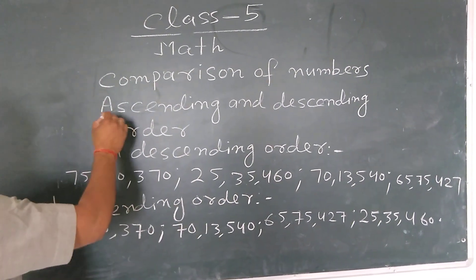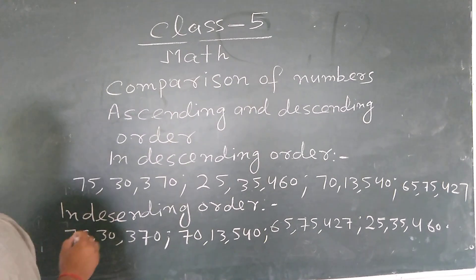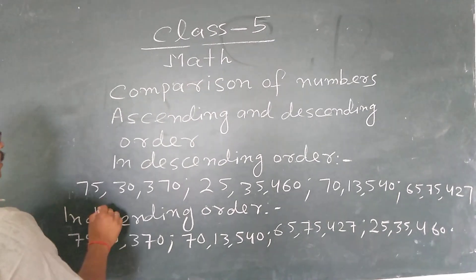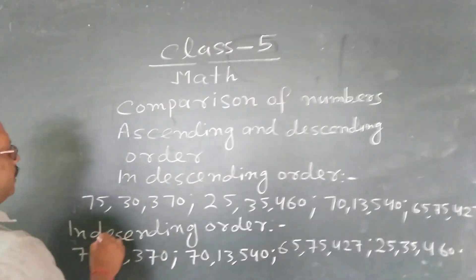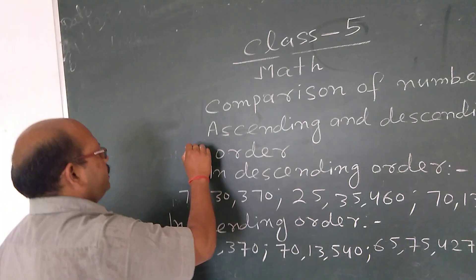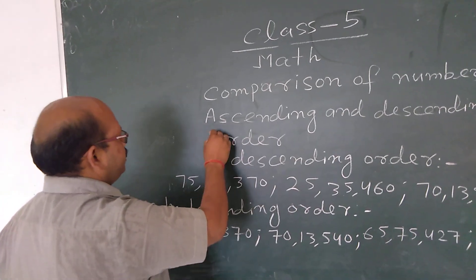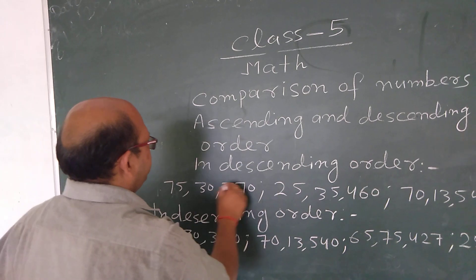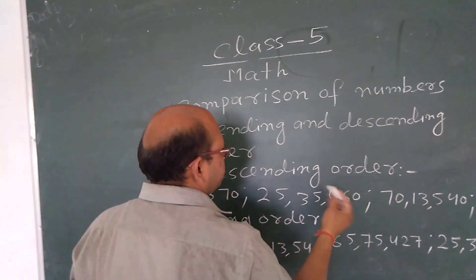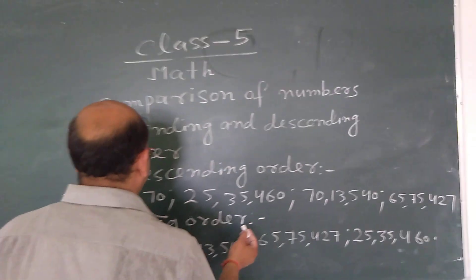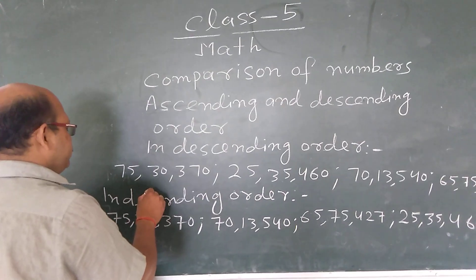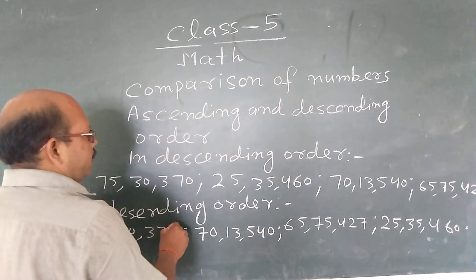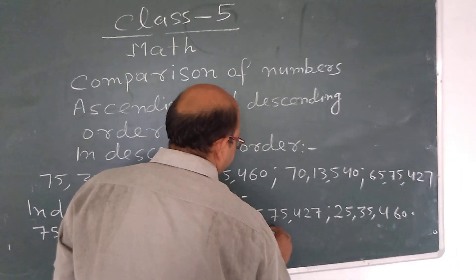Today we learned about ascending order and descending order. Ascending order is the opposite of descending order and descending order is the opposite of ascending order. In ascending order, we write the smallest number first, then greater numbers, and last the greatest number. In descending order, we write the greatest number first, then smaller numbers, and lastly the smallest number.